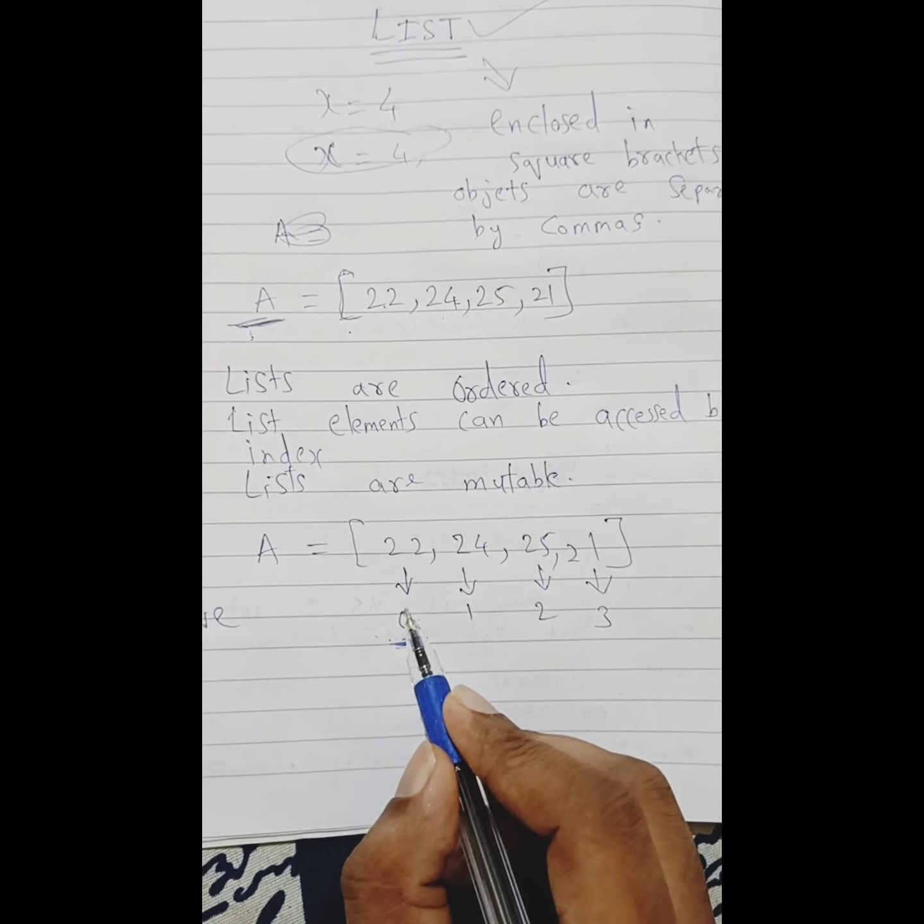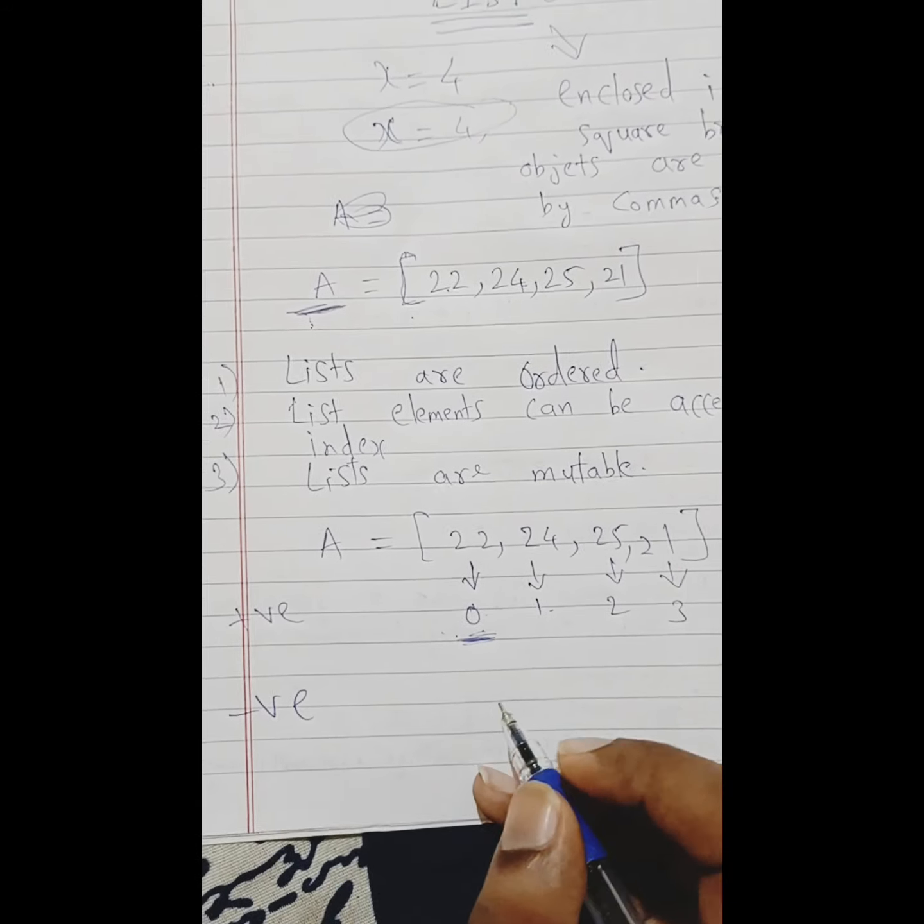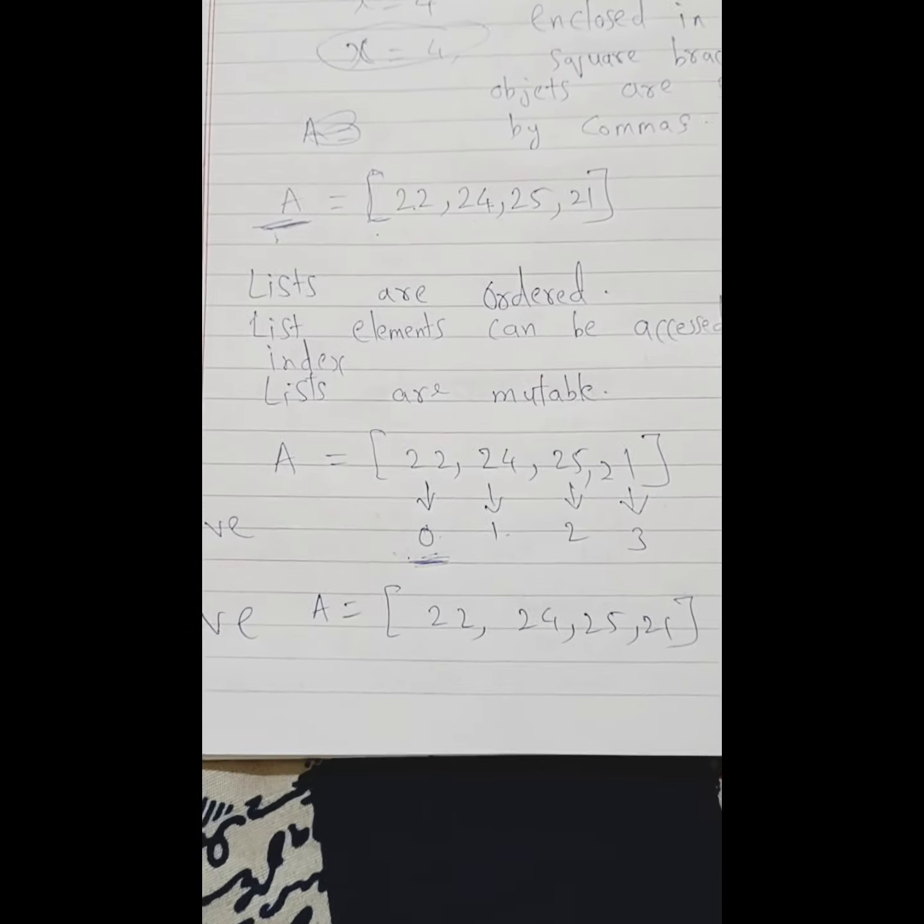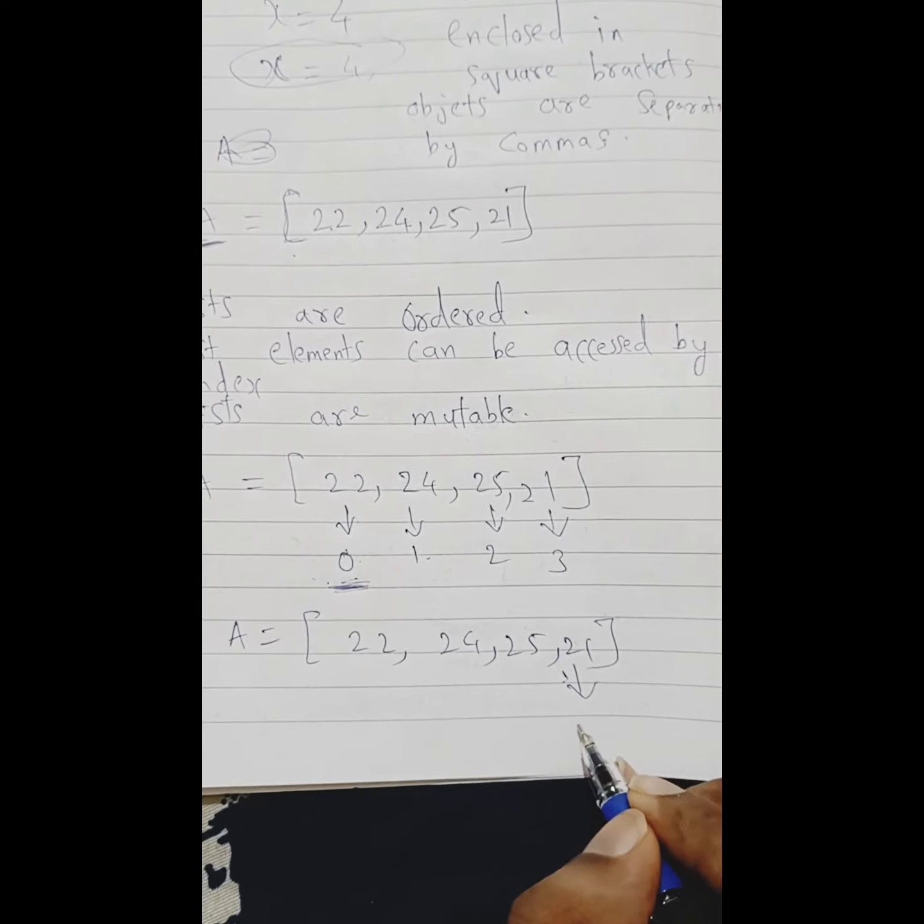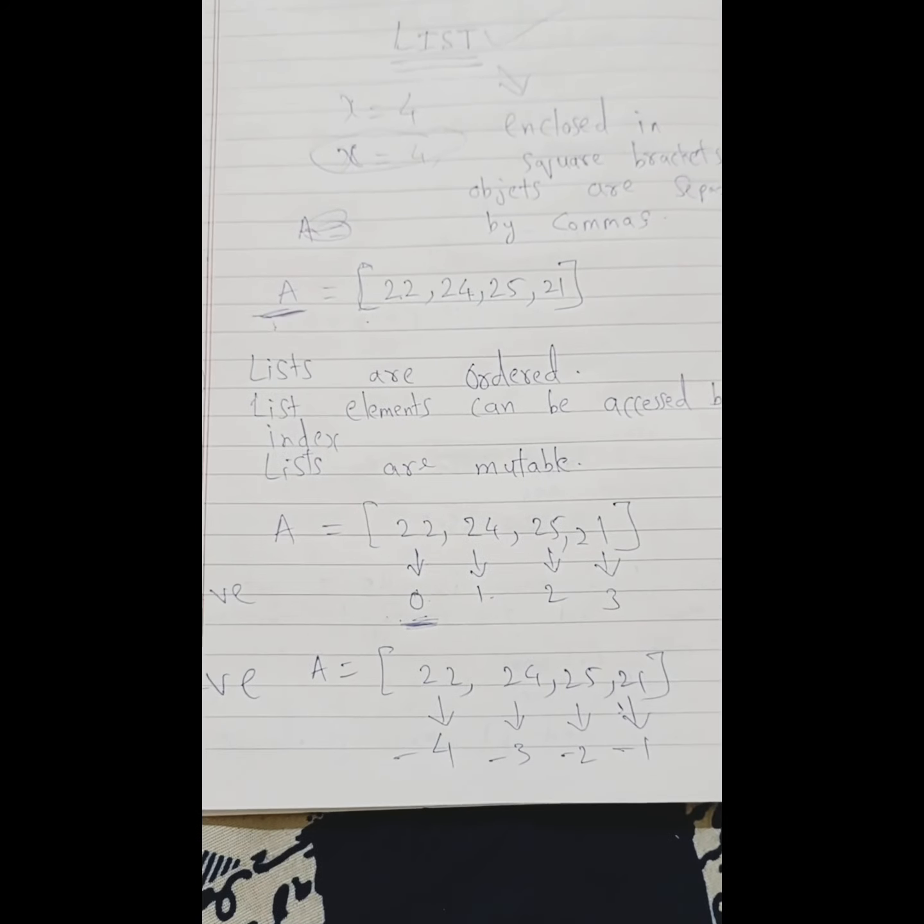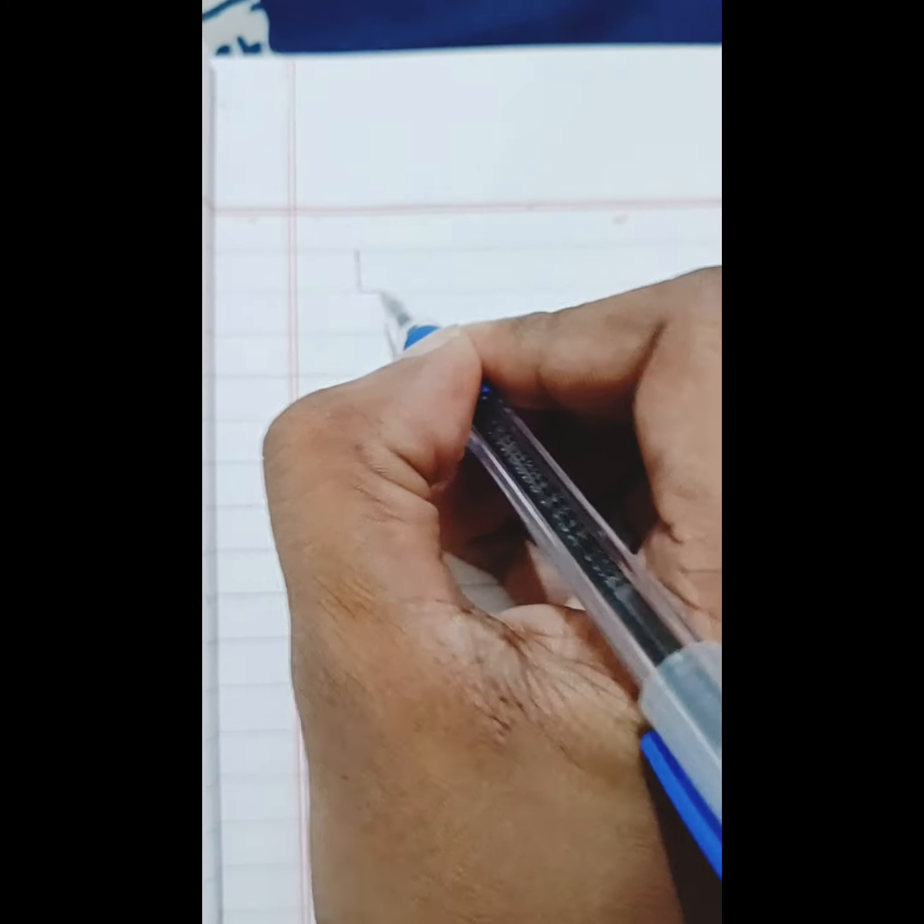Now if I talk about negative indexing, same example. You can see the last element will be considered as minus one, then minus two, then minus three, then minus four. Like this, indexing will go on. This is the way positive and negative indexing works.